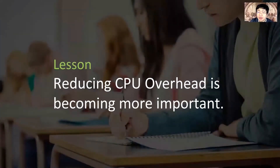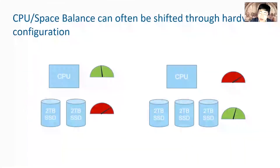Later, we realized that reducing CPU overhead became more important. Although space might be the bottleneck, some users have the flexibility to choose hardware and can shift the bottleneck to CPU by adding more SSDs to the host. Furthermore, over the years SSDs have become relatively cheaper compared to CPUs, so it is even more important to focus on CPU savings.